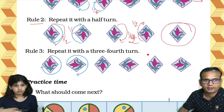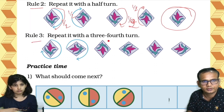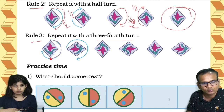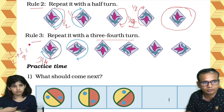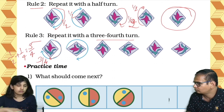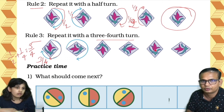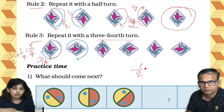Rule three: repeat it with the three-fourth turn. Now see — up to here it's a half, then half plus quarter becomes three-fourth. Half plus one-fourth equals three-fourth. Do you know this? See — this is half and this is quarter.